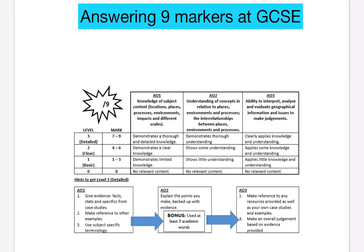This video will talk you through how you might want to go about answering the nine mark questions you'll get in your GCSE paper. Nine markers most often appear in the first two mini sections of each paper. On paper one you're likely to get a nine marker in the hazards unit and the ecosystem section, on paper two in urban issues and changing economic world, and on paper three in fieldwork and your issue evaluation. Those are the most common places you're likely to find them.